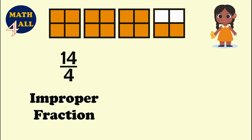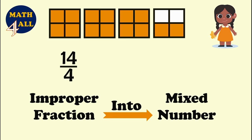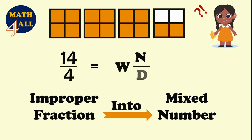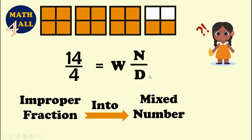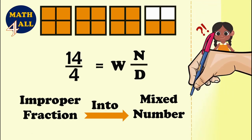First, let's read this fraction: 14 fourths. We need to convert this improper fraction into a mixed number. As we said, a mixed number consists of a whole number, numerator, and denominator. To convert an improper fraction into a mixed number, you need to use long division.